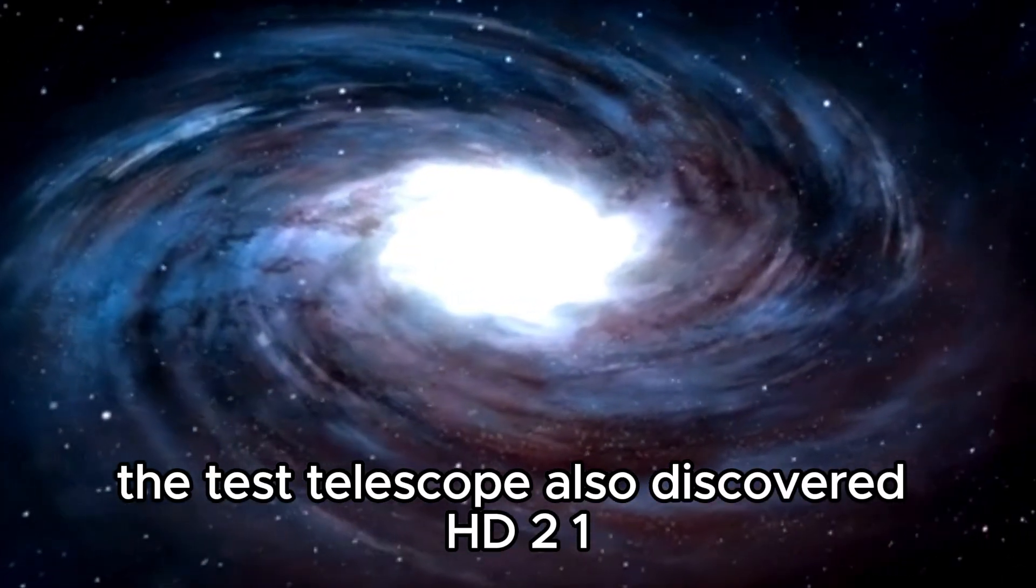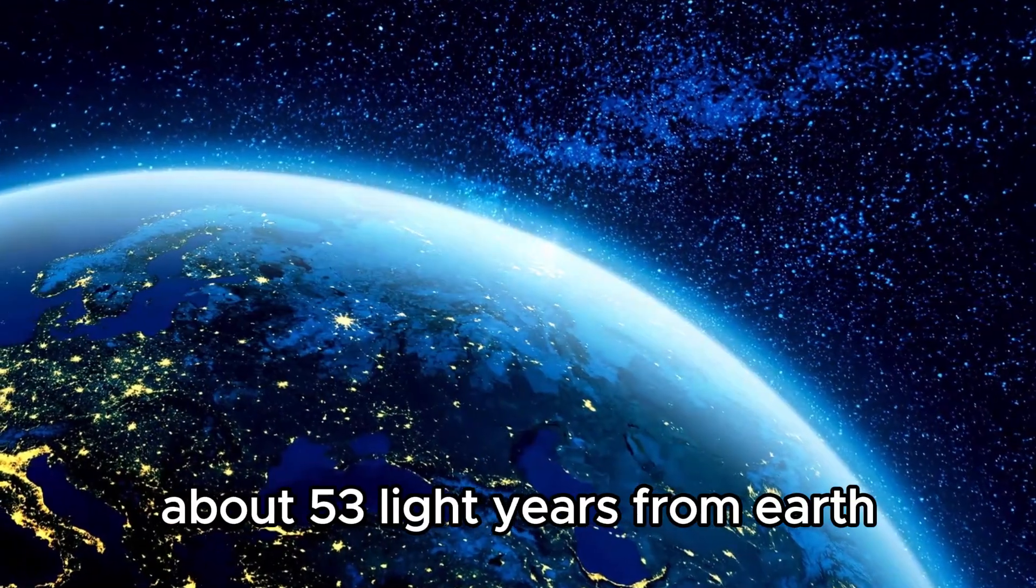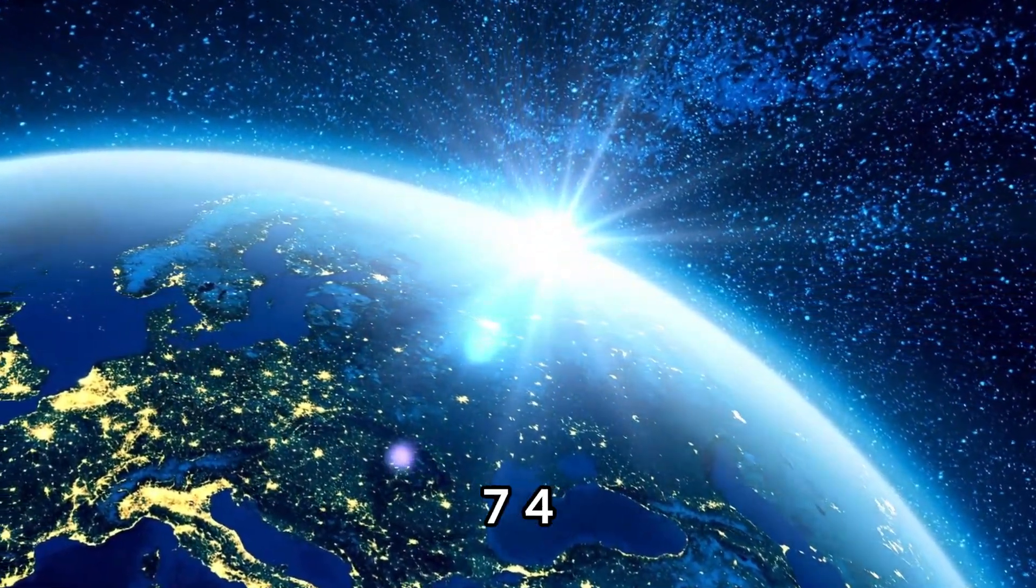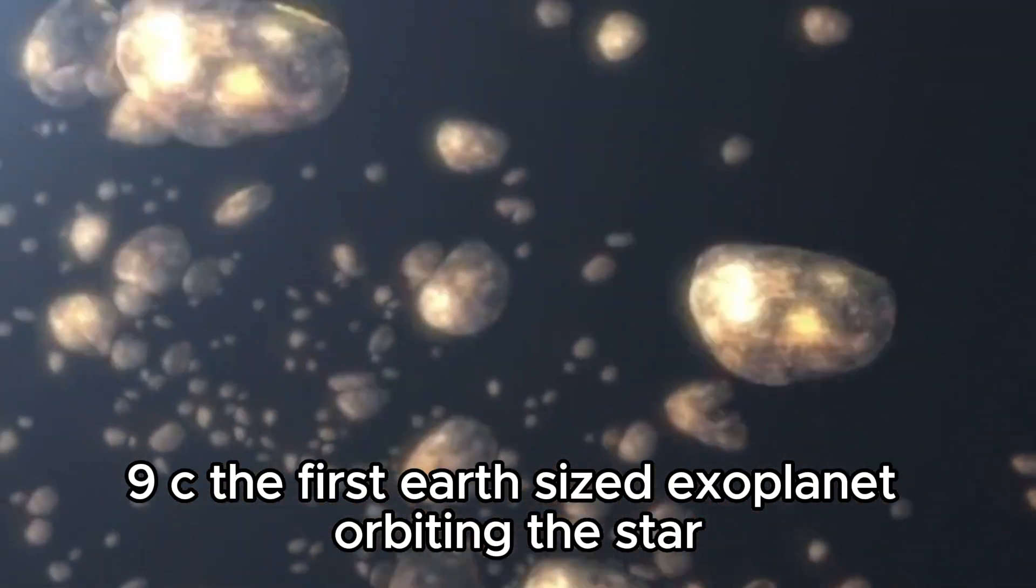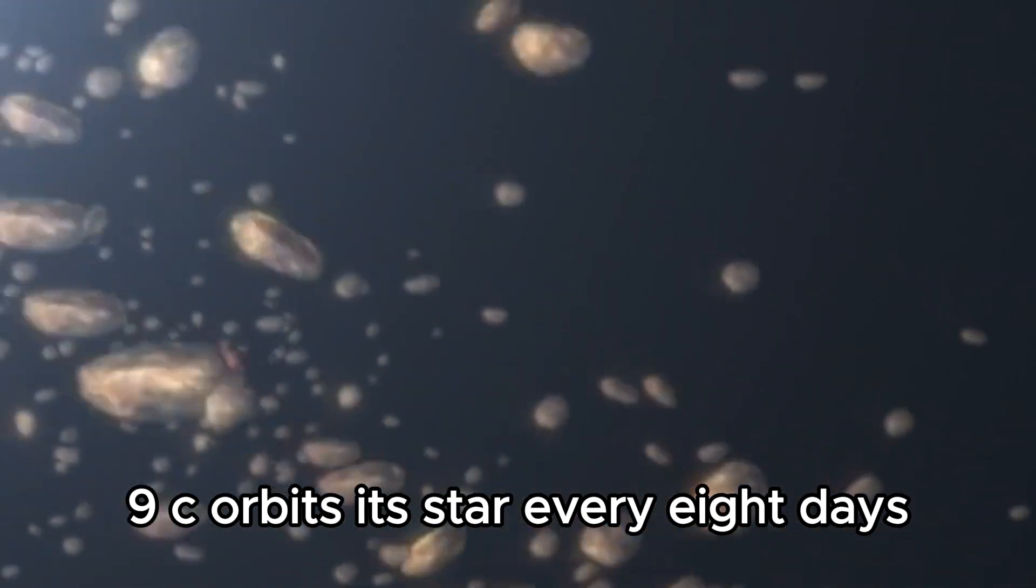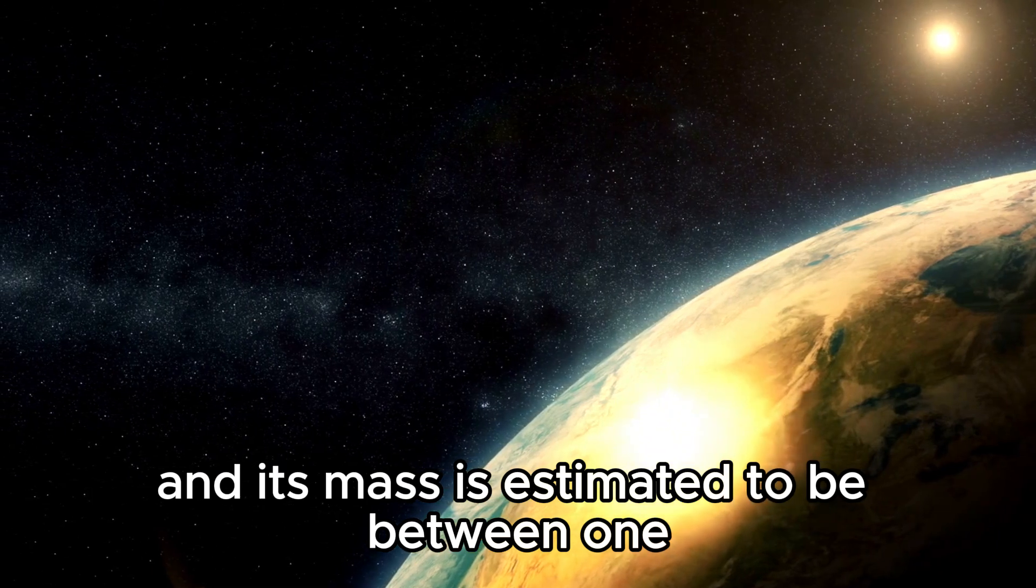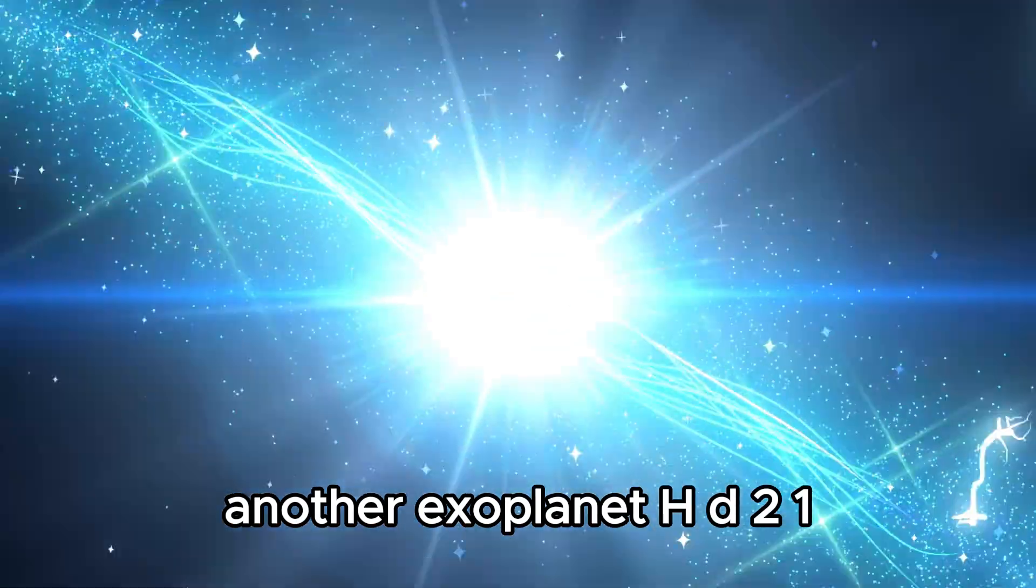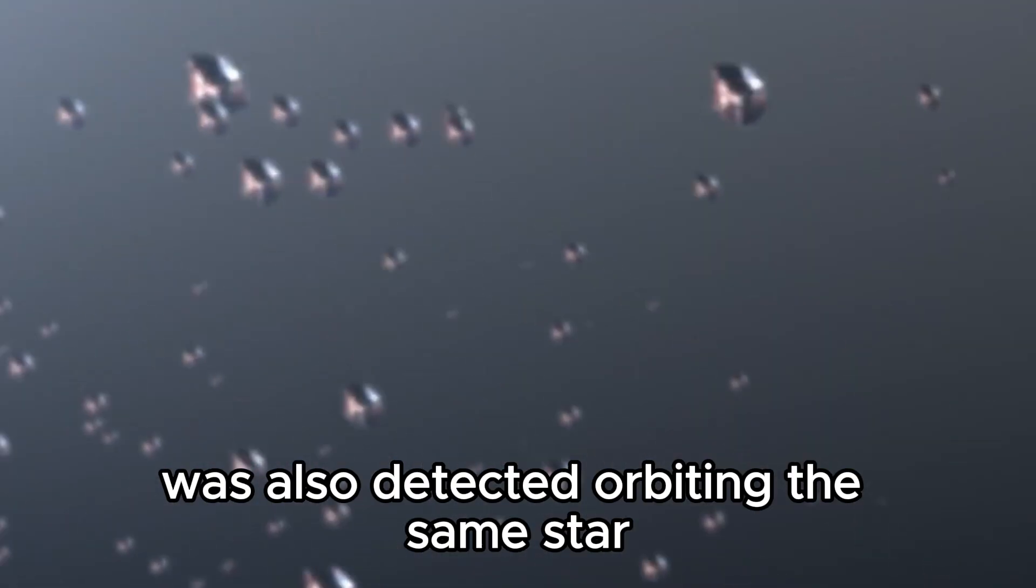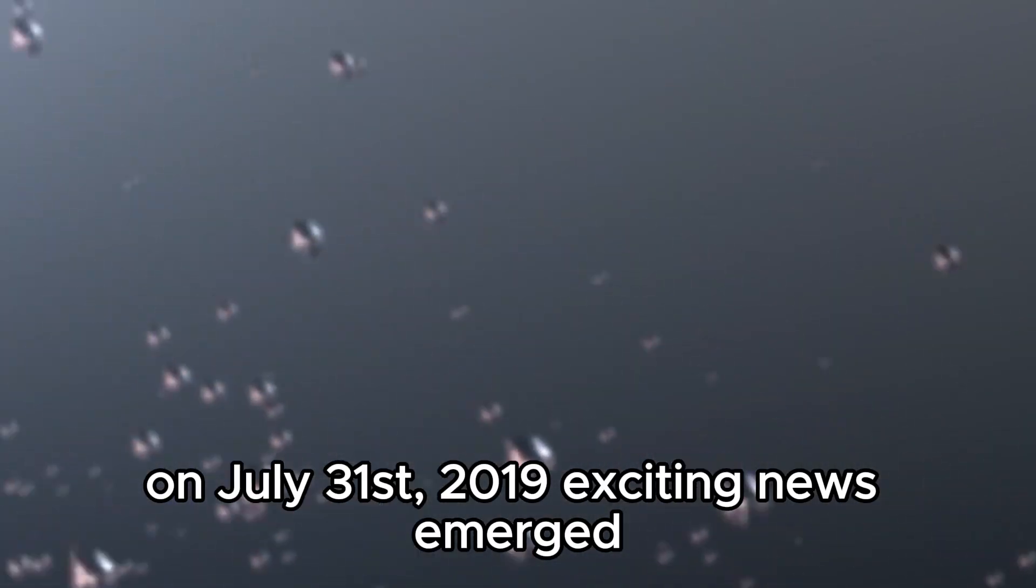The TESS telescope also discovered HD 21749, an orange main sequence star in the constellation Reticulum about 53 light-years from Earth. It hosts the exoplanet HD 21749c, the first Earth-sized exoplanet orbiting this star identified by a single transit event. HD 21749c orbits its star every eight days, has a radius 1.1 times that of Earth, and its mass is estimated to be between 1 and 2 times that of Earth. Another exoplanet, HD 21749b, was also detected orbiting the same star, with a mass 20 times that of Earth and a radius 2.9 times that of Earth.